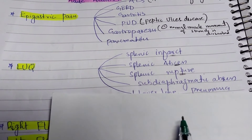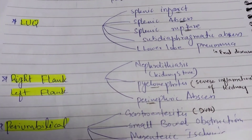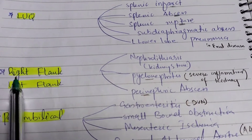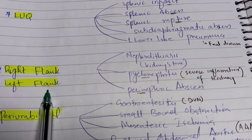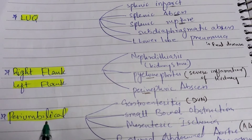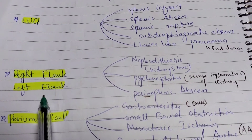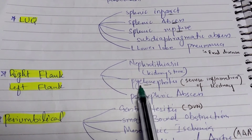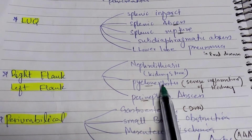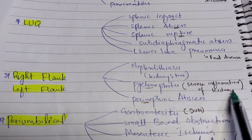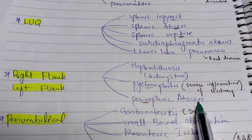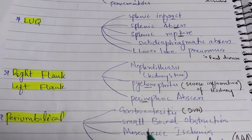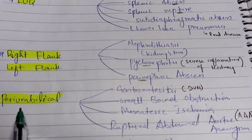In the right flank and left flank, we have nephrolithiasis — kidney stones — pyelonephritis, which is severe inflammation of the kidney, and perinephric abscess, where abscess formation occurs around the kidney.